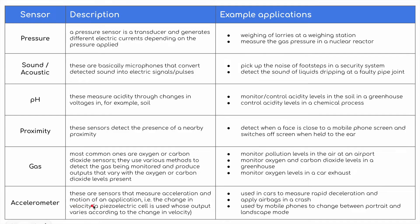Finally, accelerometers are sensors that measure acceleration and motion — i.e., the change in velocity. A piezoelectric cell is used whose output varies according to the change in velocity. This could be used in cars to measure rapid deceleration and deploy airbags in a crash, or it could be used simply by mobile phones to change between portrait and landscape mode when you rotate the phone.